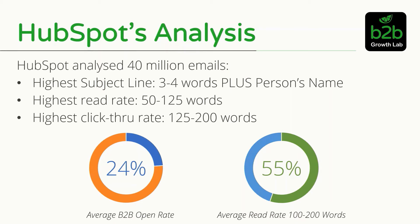Let's have a look at HubSpot's analysis. They did a survey of 40 million emails. They found that the highest read subject line was 3 to 4 words, plus the person's name. The highest read rate is somewhere between 50 to 125 words, and the highest click-through rate is 125 to 200 words. So if you've got a subject line of 3 or 4 words including the person's name, and around 125 words in the body, that's your best chance of getting a good open and read rate.